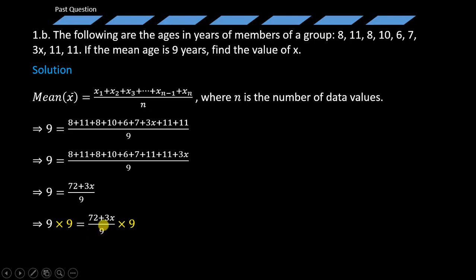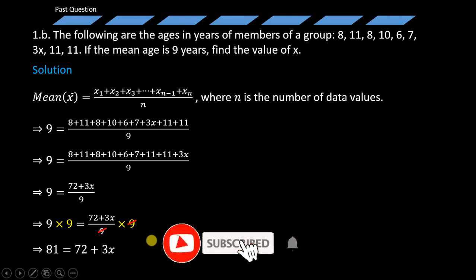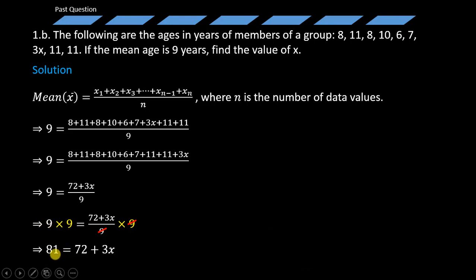On the right side of the equation, 9 divides out 9, and that simplifies to 81 = 72 + 3X, because 9 times 9 equals 81.